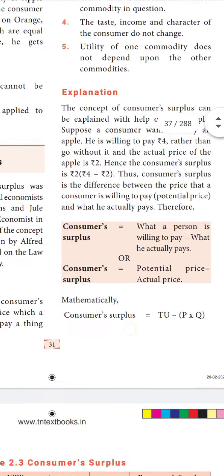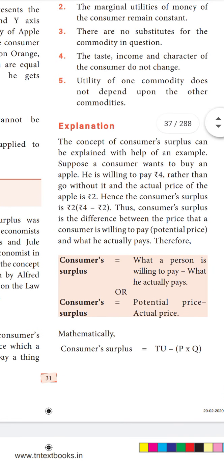Now the formula. Consumer surplus equals what a person is willing to pay minus what he actually pays. This can also be written as: consumer surplus equals potential price minus actual price. For example, 25,000 minus 20,000 gives a consumer surplus of 5,000.